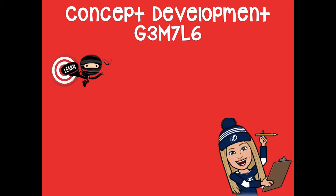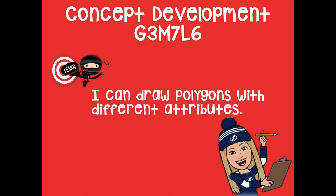Hey boys and girls, it's Mrs. Walker. Today for our lesson we continue to talk about polygons and we're going to talk about the attributes that those shapes have. Attributes are just like characteristics of that shape, and polygons are just a closed shape with straight sides — they can't have curves. Our learning goal for today says: I can draw polygons with different attributes.